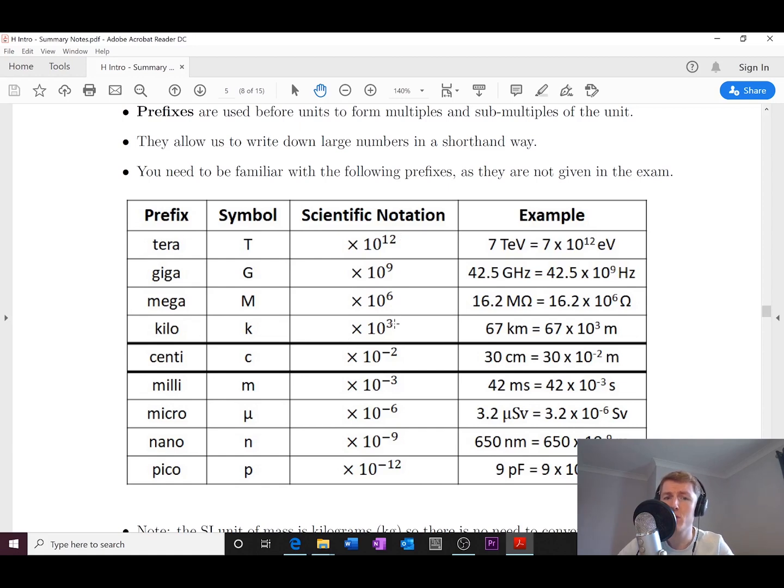If we move up the way this time, you'll see the powers of three pattern. So we've got 10 to the 3, 10 to the 6, 10 to the 9, and 10 to the 12. So those are for kilo, mega, and giga, remember.